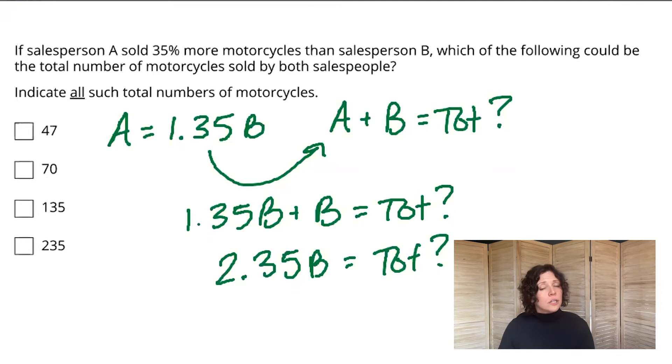And so there are a couple of clues in this problem that tell me not to start with algebra. And the first one is that we've been given a proportion between the two unknowns. And so A is always 35% more than B. The other thing is that we're asked for a total number of something that has to be an integer. So number of motorcycles. So if I'm dealing with proportions and integers, I like to look at things in the format of a ratio.